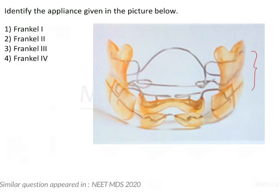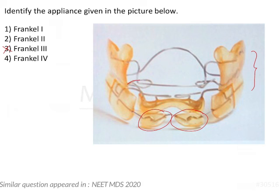In this question, the lip pads are in the lower — that is, in the mandibular anterior — so it is not FR 3. And if you see the canine loops, they are in the shape of a proper loop. So this is an FR 2.